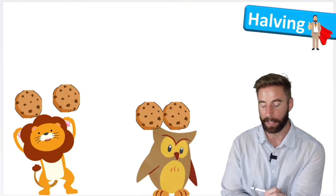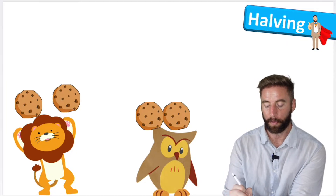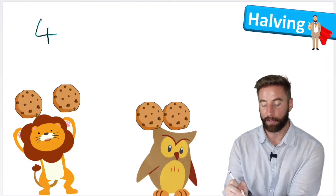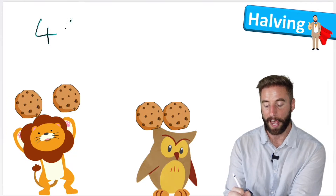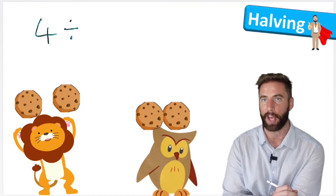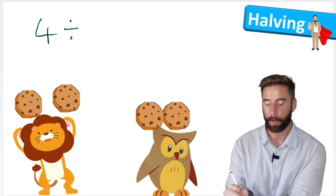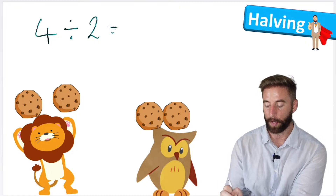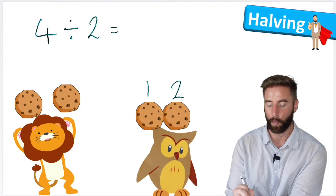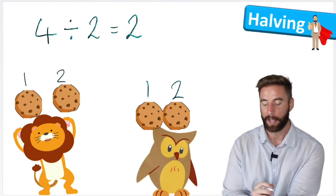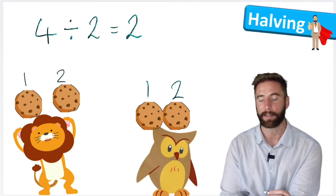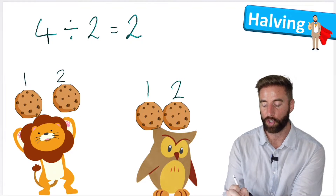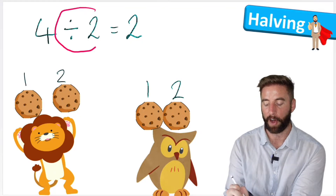So we have halved the amount that we had. How could we write that as a number sentence? Well, we started with four and then we divided — we shared — because remember, division is just a fancy way of saying shared. We shared them between two. And we were left with two each. So four divided by two equals two. And that's how we would write that number sentence.